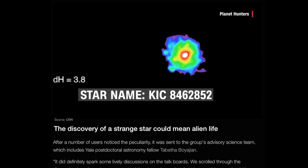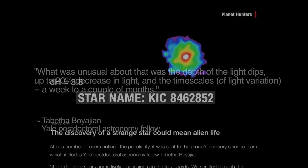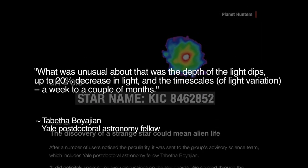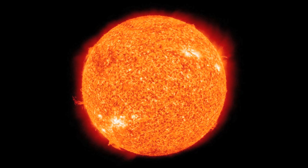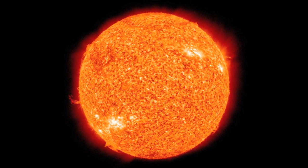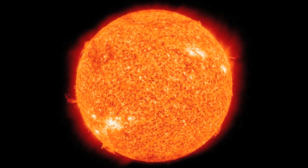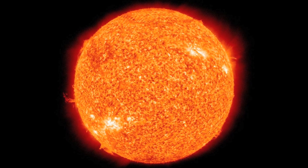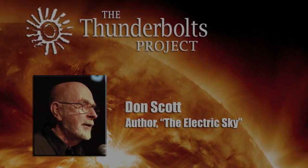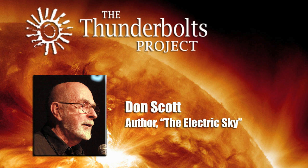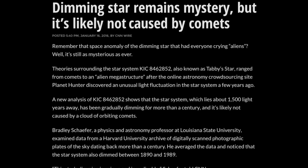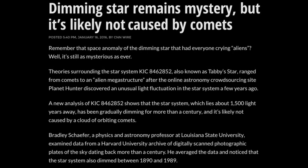One investigator states of the star's sudden changes: what was unusual about that was the depth of the light dips — up to 20% decrease in light — and the timescales of light variation, a week to a couple of months. What is the relevance of this discovery for the Electric Universe theory of stars? The second paper that caught our attention was entitled 'Dimming star remains mystery, but it's likely not caused by comets.' The dimming star remains a mystery; what is its cause? That's not answered.